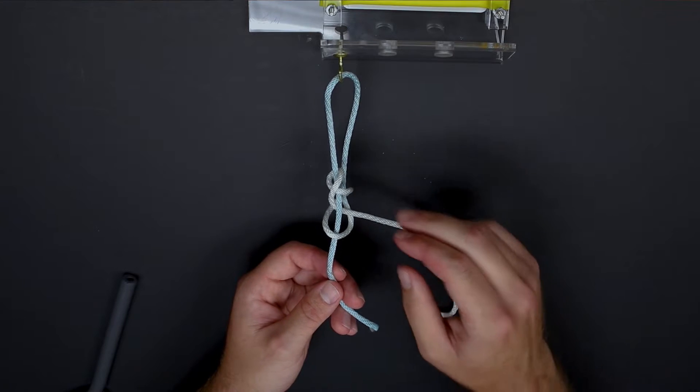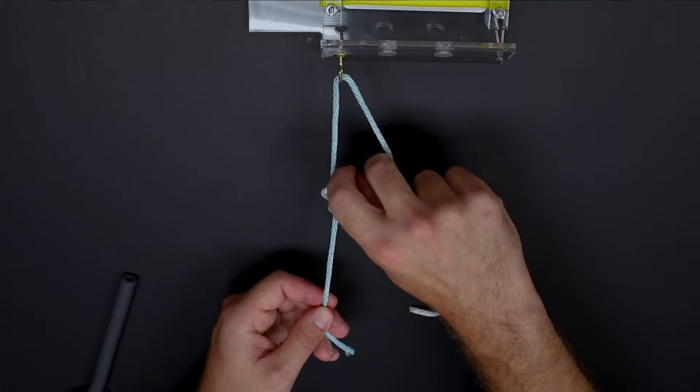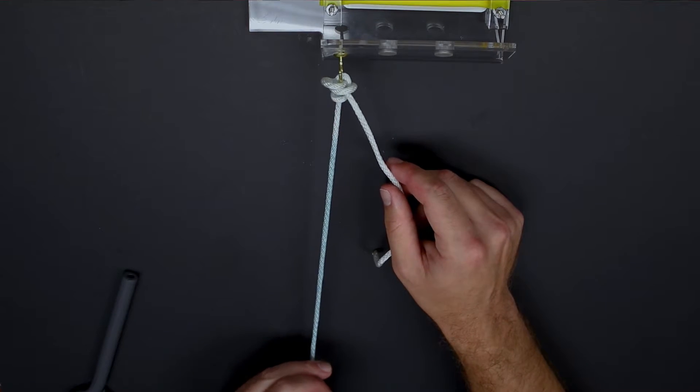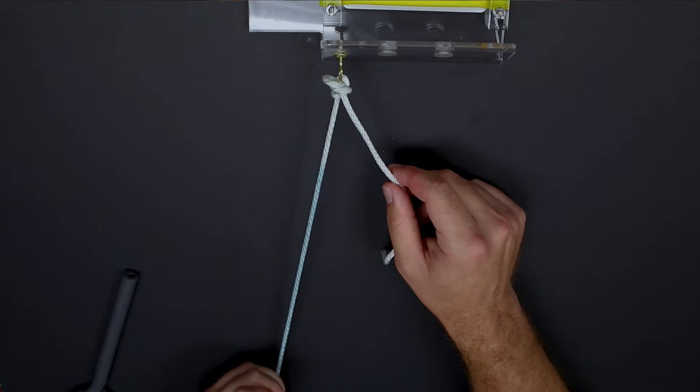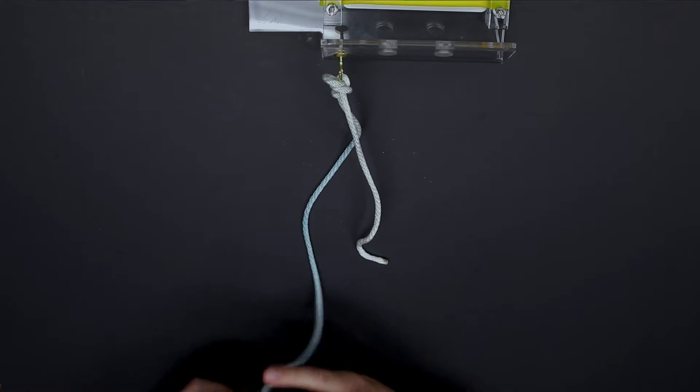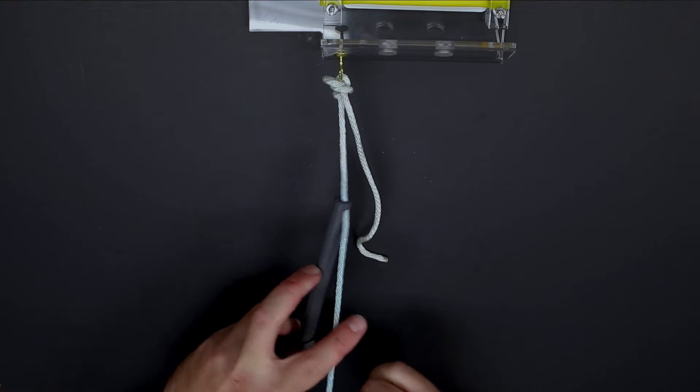You do not want to pull on this loop limb as this will lock this type of knot. We can dress the knot before we place it through the cannula and then we pull on the post limb in order to secure it against the tissue. A knot pusher may then be used in order to further push this against the tissue.